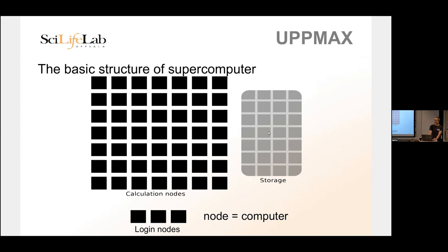Your project folder under /proj and your home folder are located on network storage. All the nodes do have hard drives with their own operating systems and you can use those local hard drives. If you want to do a very disk-intensive analysis that reads and writes to files all the time, it's going to be slower over the network. Whereas if you do it on the local hard drive, it's about a tenth of the delay. The local hard drive of the nodes is accessible at /scratch.